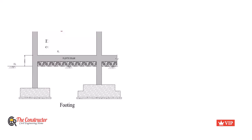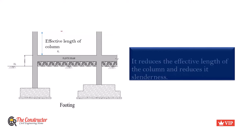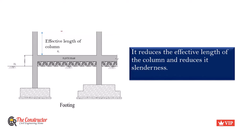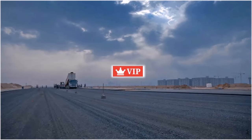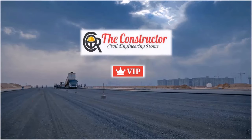The use of plinth beams reduces the effective length of columns, which reduces their slenderness and further prevents buckling issues under unexpected loading conditions. Hope this video was informative. For more informative videos, subscribe to the VIP membership of The Constructor. Thank you.